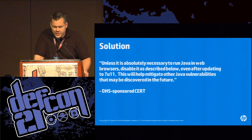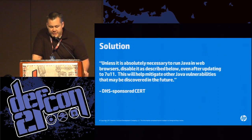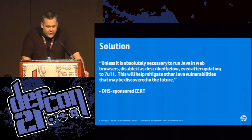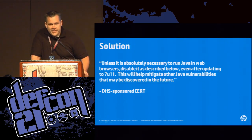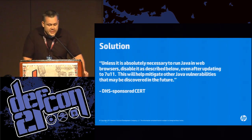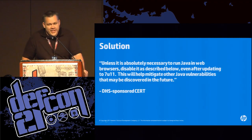The first thing we're going to do is start with the solution actually provided to us by the U.S. government: 'Unless it's absolutely necessary to run Java in a web browser, disable it as described below, even after updating to 7U11; this will help mitigate other Java vulnerabilities that may be discovered in the future.' This came from an advisory on the day they released U11 — the U.S. government is telling you not to use the latest version of a software. You know it's been a rough year for a piece of software. But nobody in this room is actually going to follow what the U.S. government has to say, so we're forced to do this presentation.